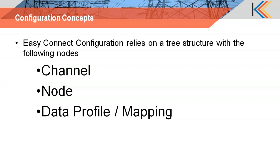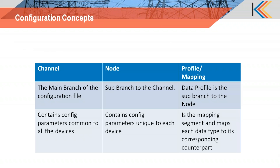To configure SYNC devices we have software called EasyConnect Configuration, which is shipped along with our devices. EasyConnect Configuration relies on a tree structure with the following branches: the main branch is the channel, then we have a node, and then something called a data profile or data mapping. The channel is the main branch of the configuration file.